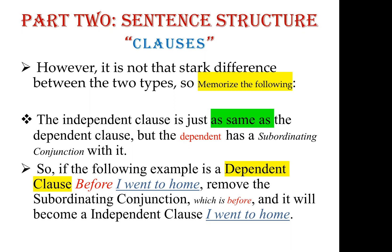For example: 'before I went home' — the word 'before' in red is a subordinating conjunction, making it a dependent clause. When we remove the subordinating conjunction 'before,' it becomes the independent clause 'I went home.' So 'before I went home' is a dependent clause, and removing that conjunction gives us an independent clause.